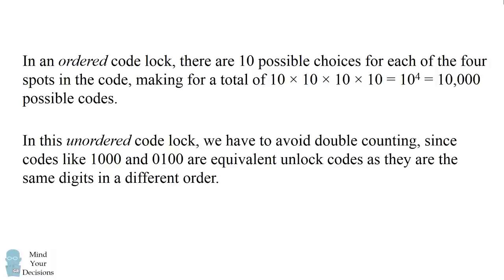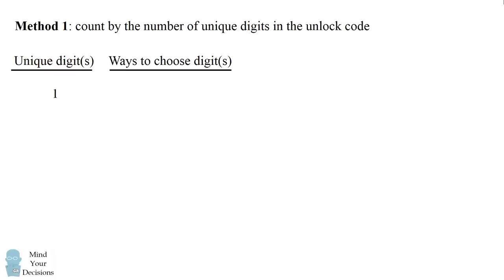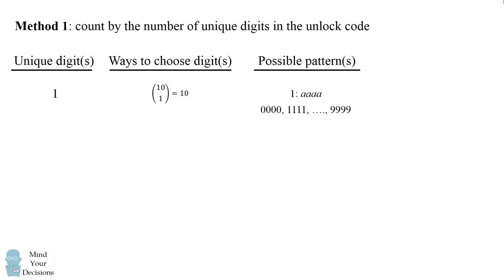One way that we can count the unordered code locks is to count the number of unique digits in the unlock code. Starting with one unique digit: there are 10 choose 1, or 10 different digits. Once we choose that one digit, there's only one possible unlock code, which is using that same number 4 times. So there are 10 different codes if we have one unique digit.